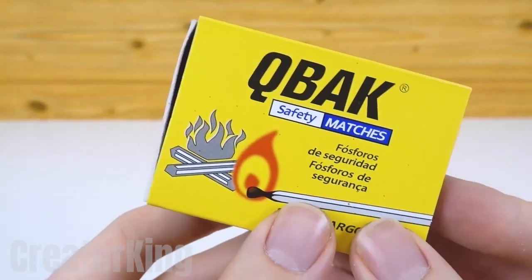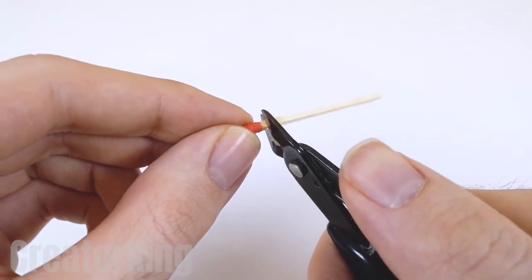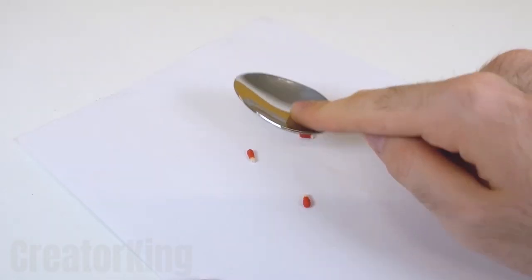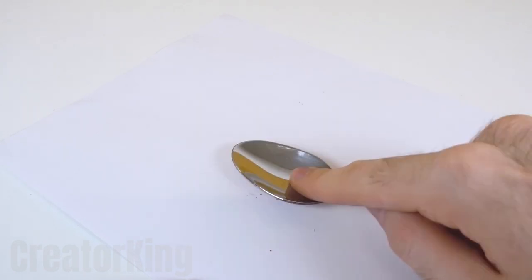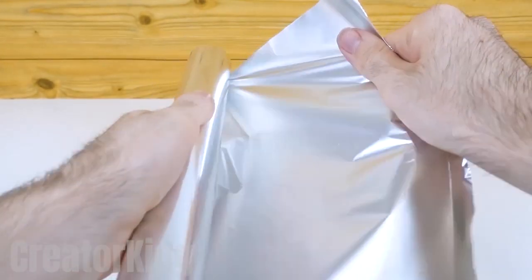But no rocket would work without fuel, not even an aluminum one. So let's prepare some with the magical matchstick powders. Start removing the heads from a trio of matches and crush them with a spoon like you crush pills you can't take.